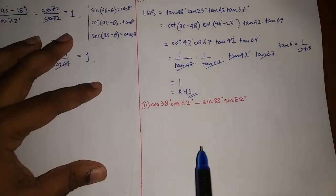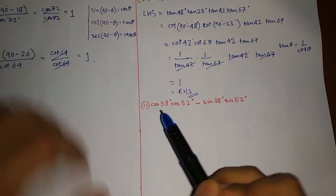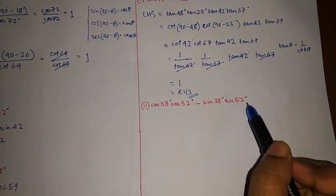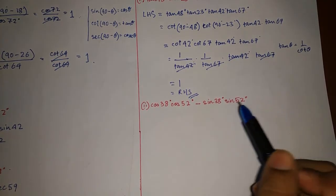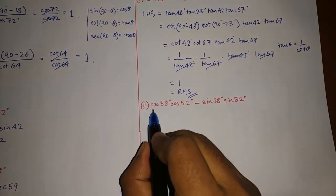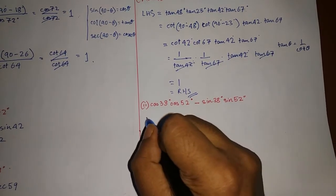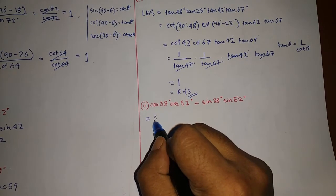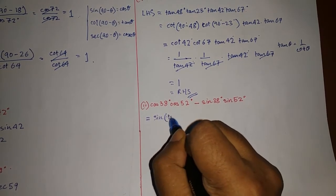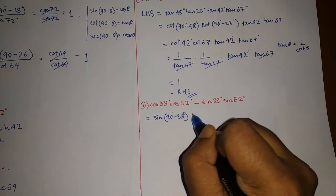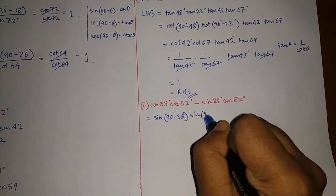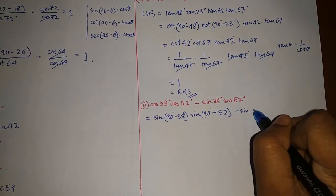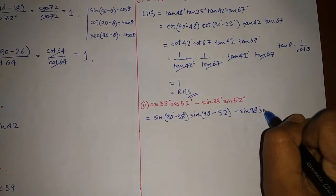This next one is similar — we have to bring all the trigonometric ratios into one type. Let's turn the cosines into sines. Turning cos 38° into sine: sin(90° − 38°) = sin 52°. And cos 52° becomes sin(90° − 52°) = sin 38°. We now have sin 52° · sin 38° − sin 38° · sin 52°.